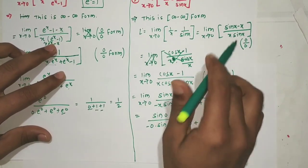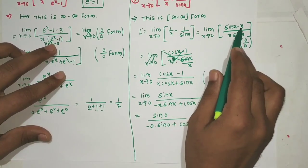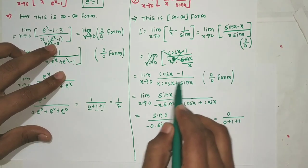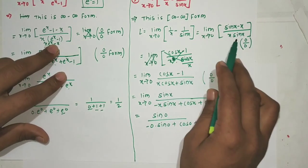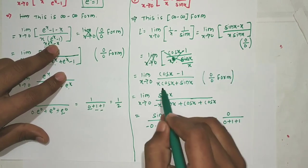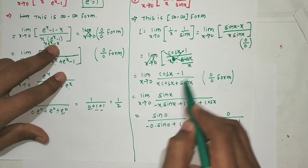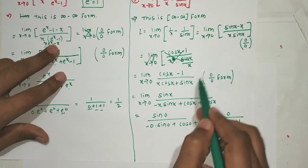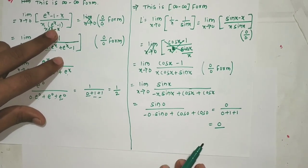Applying L'Hôpital's rule: derivative of (sin x - x) is (cos x - 1). Derivative of denominator x·sin(x) using product rule is x·cos(x) + sin(x)·1. Putting x=0: numerator = cos(0) - 1 = 0; denominator = 0 + 0 = 0. Still 0/0 form.